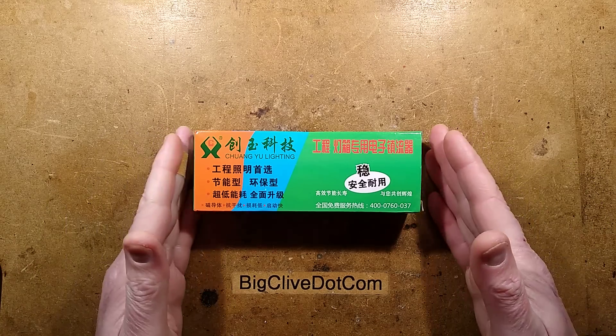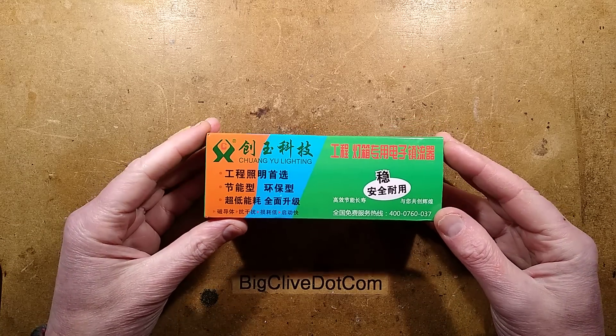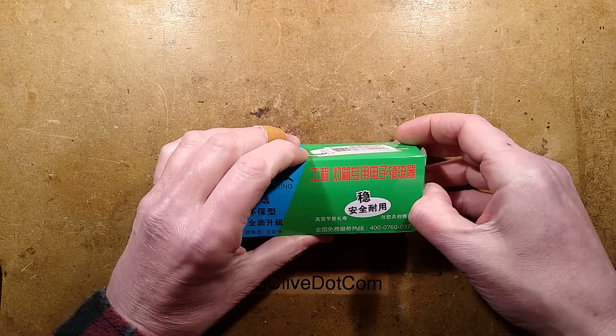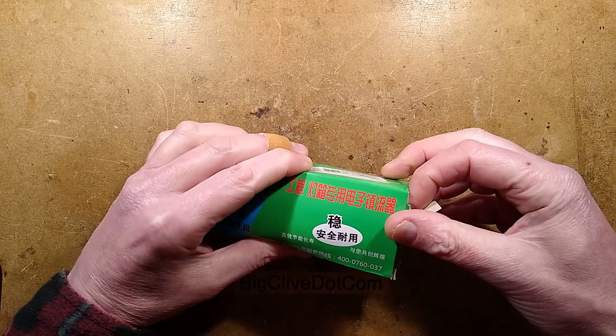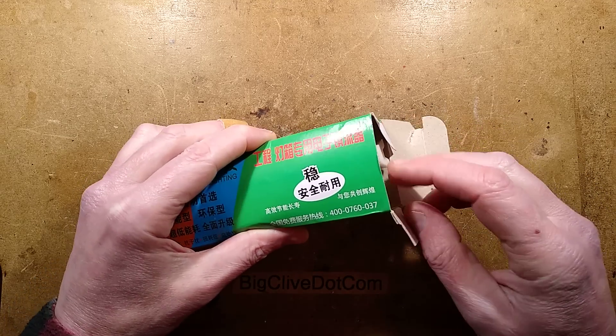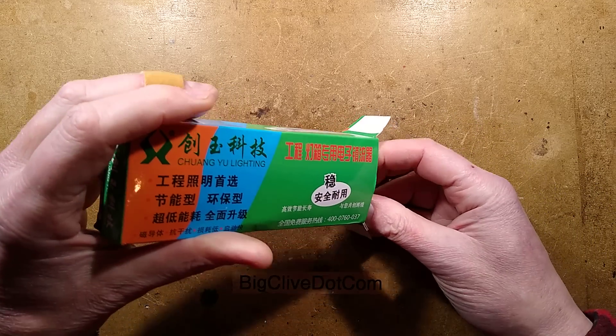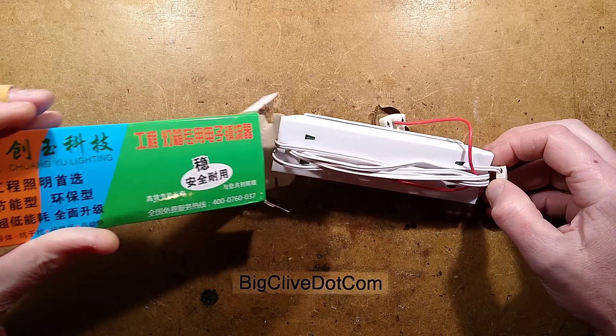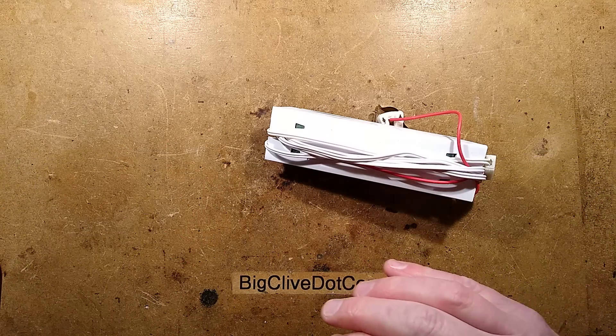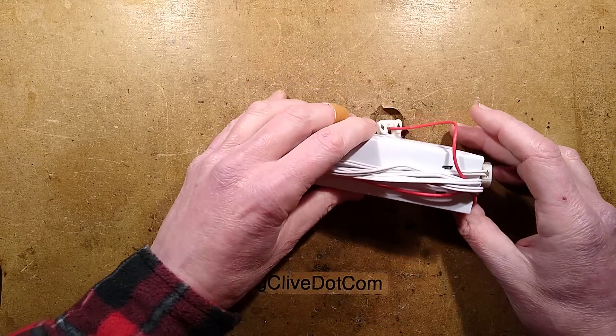Let's take a look at a low-cost electronic ballast for fluorescent lighting from AliExpress. This cost £3 inclusive of shipping, and another 60p was added on by the English government for their massively efficient running of the country. That was sarcasm.